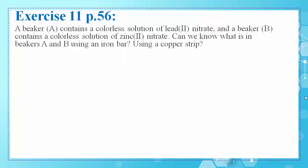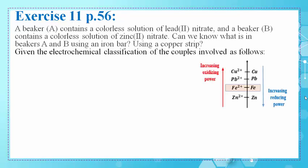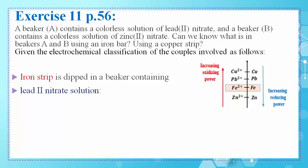In exercise 11, page 56, beaker A contains a colorless solution of lead(II) nitrate and beaker B contains a colorless solution of zinc(II) nitrate. We classify the redox couples involved: Cu2+/Cu, Pb2+/Pb, Fe2+/Fe, and Zn2+/Zn. If the iron strip is dipped in the lead nitrate solution, Pb2+ has more oxidizing power than Fe2+, and Fe has more reducing power than Pb. A spontaneous reaction takes place between Pb2+ and Fe, producing Fe2+ and Pb.